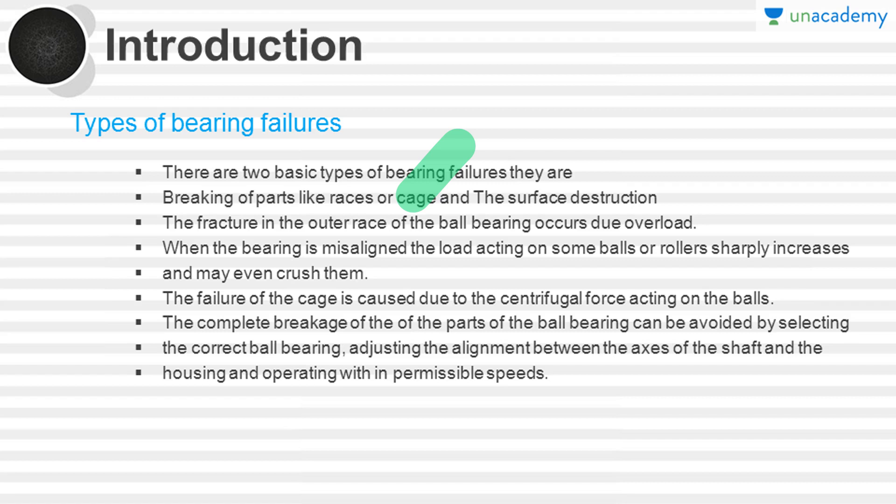The failure of the cage is caused due to the centrifugal force acting on the balls when the shaft is rotating. The ball bearing along with the shaft undergoes rotation, causing the balls to experience centrifugal force, which damages the cages. Complete breakage of bearing parts can be avoided by selecting the correct ball bearing, adjusting alignment between the shaft axis and housing, and operating within permissible speeds.